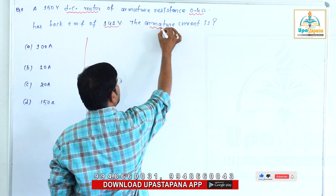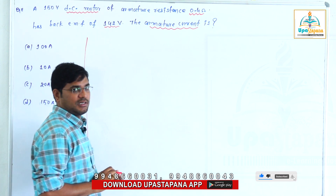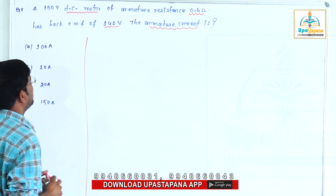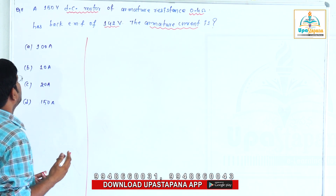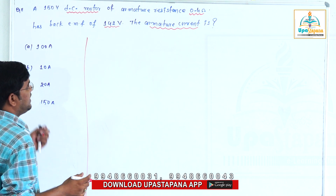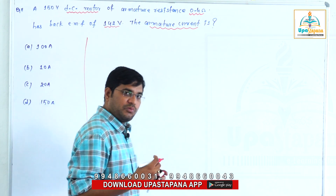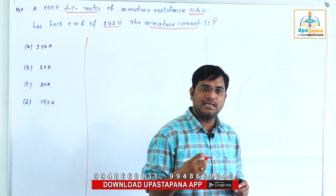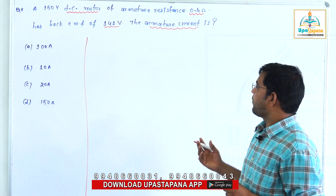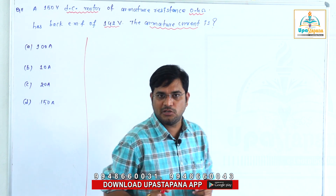The armature resistance is 0.4. For the DC motor, there is no specific mention of the field resistance, so we can assume 0.5. No problem, we can proceed with 0.5.